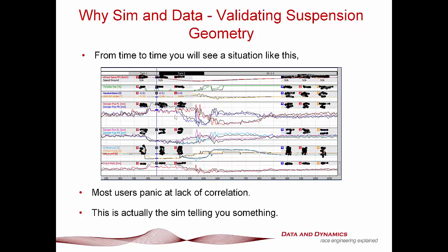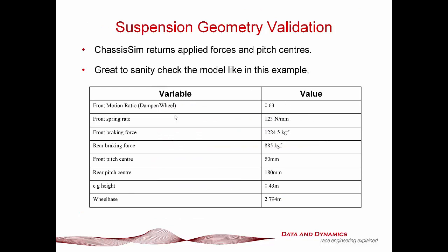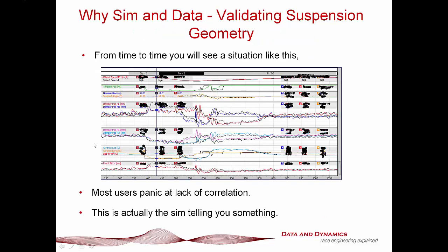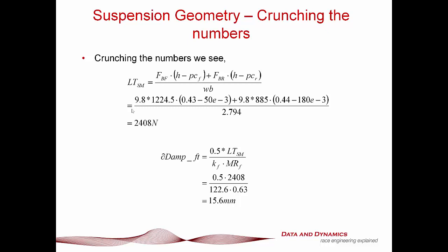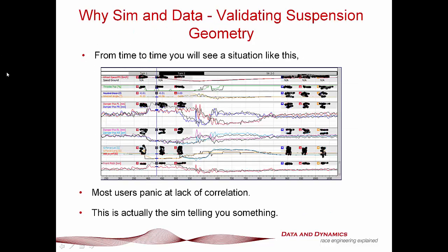When you see a situation like this, your best friend is to go to suspension geometry validation and do some hand calculations. And we are not talking rocket science here, ladies and gentlemen — everything I'm about to discuss is high school level maths, and can be done by a high school student or anyone with a calculator. One of the great things about ChassisSim is it returns all the variables that drove this behavior: your front motion ratio, spring rate, braking force, pitch centers, rear pitch centers, CG height, and wheel base. That gives you the ability to hand-calc what just went on.